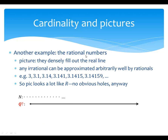Here's another example: the rational numbers. Remember, rational numbers are all ratios of integers, and there are plenty of irrational numbers. The picture for Q is a lot like the picture for R. If I actually put a tiny dot at every point that's rational, I'm not going to notice any gaps. Yes, there are things like pi and root 2 that aren't there, but any irrational number can be approximated arbitrarily well by rationals.